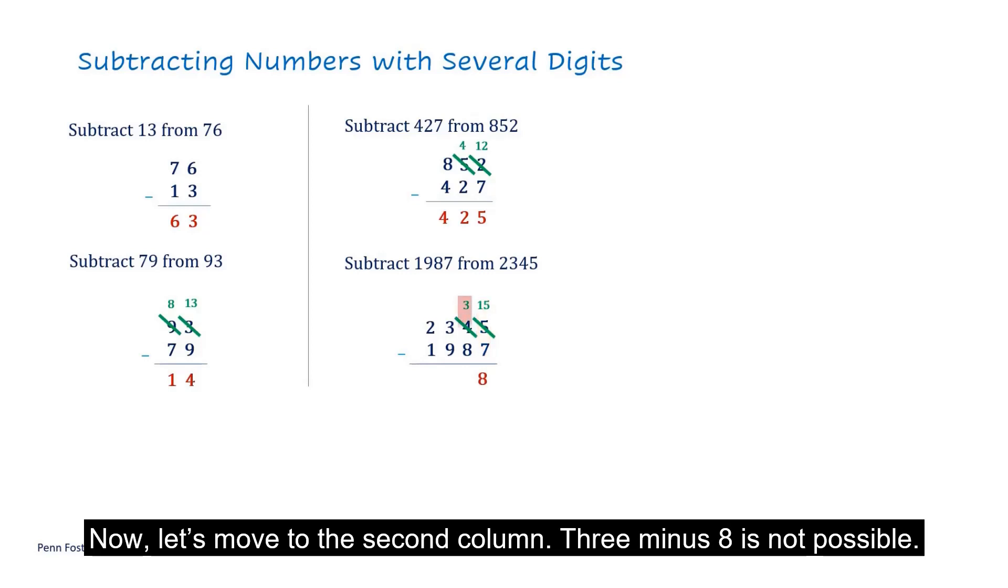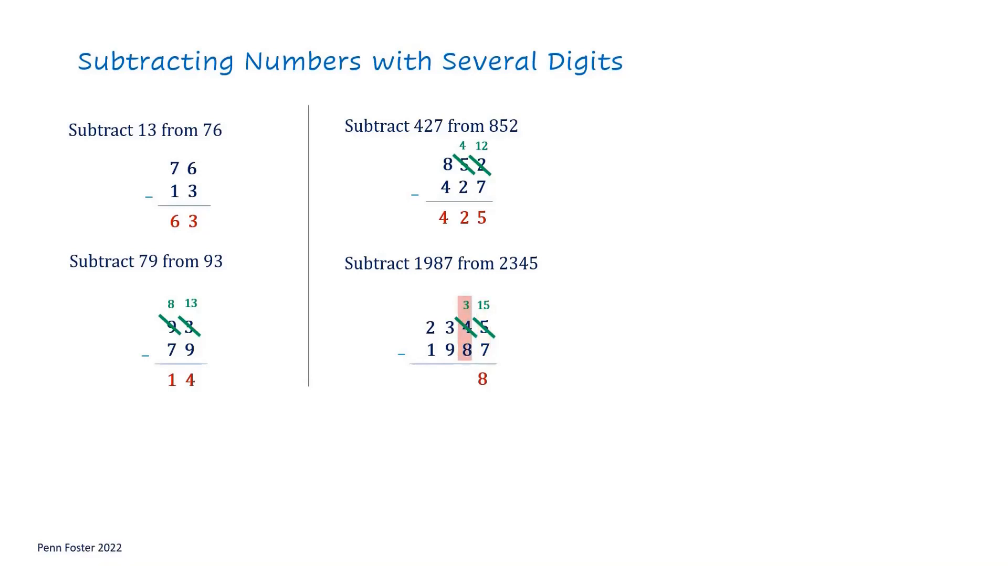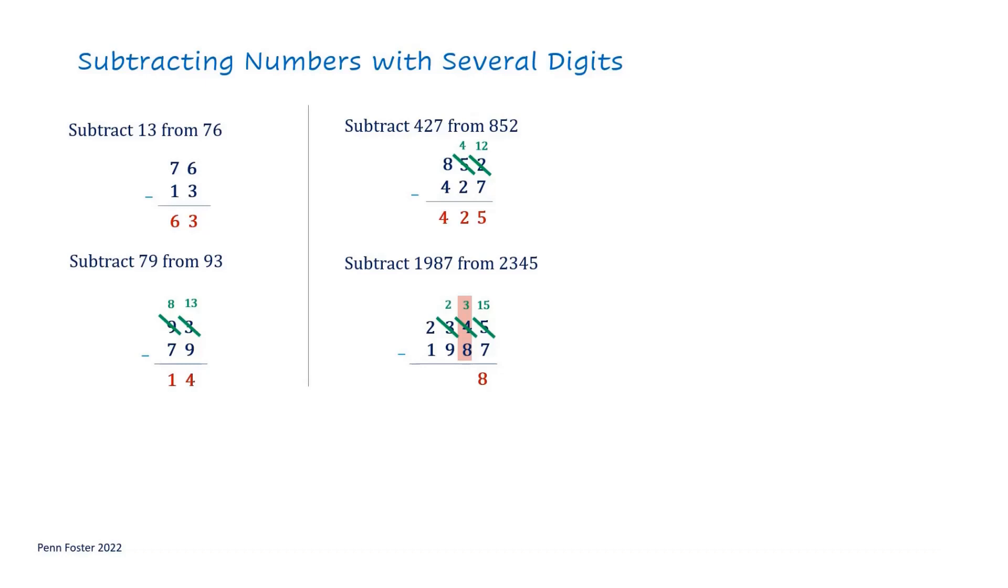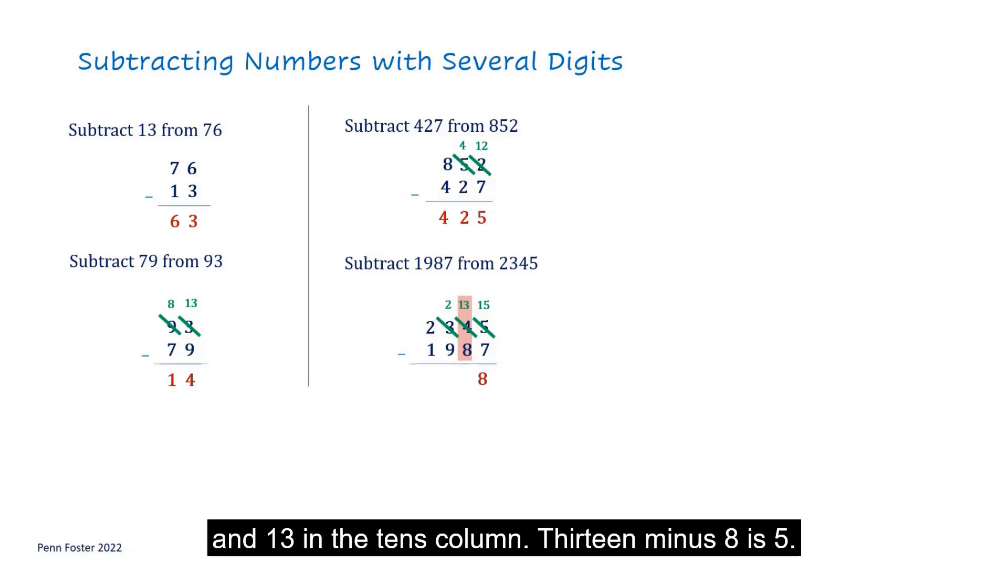Now, let's move to the second column. 3 minus 8 is not possible. Borrowing from the 3 in the 100's column results in 2 in the 100's column and 13 in the 10's column. 13 minus 8 is 5.